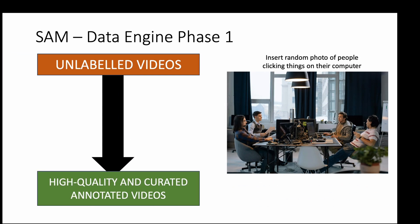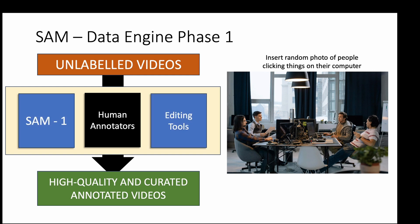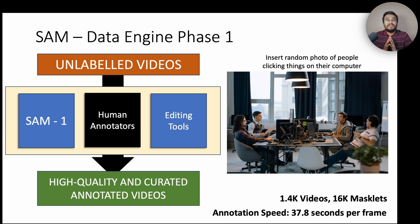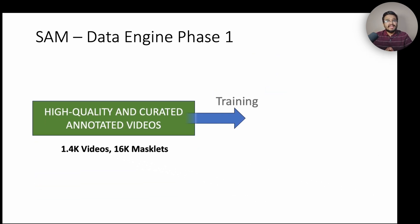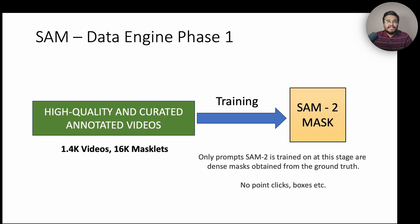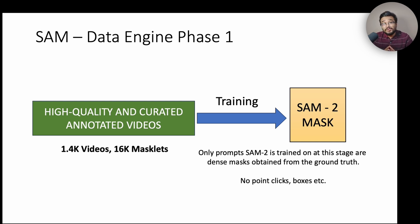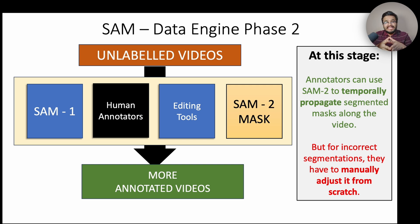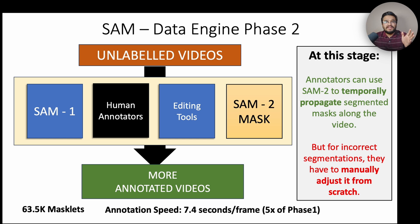In phase 1, annotators manually annotate frames from about 1,400 videos yielding 16,000 masklets. There is no tracking model for temporal propagation, but annotators use the original SAM model to assist with initial segmentation, which they clean up using brush and eraser tools. The data from phase 1 trains a basic SAM2 model — not yet promptable with clicks, but trained on dense masks. In phase 2, annotators use all phase 1 tools plus this basic SAM2 model, which can propagate masks along the time axis, making annotation much faster and yielding 63,500 masklets.